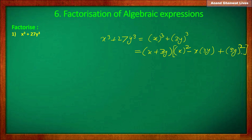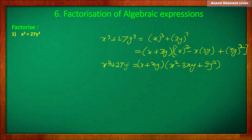So it is equal to (x plus 3y) into another bracket (x squared minus 3xy plus 9y squared). So those are the factors of x cube plus 27y cube.